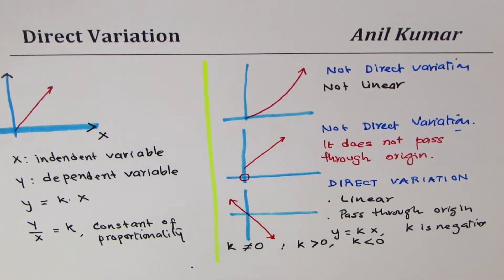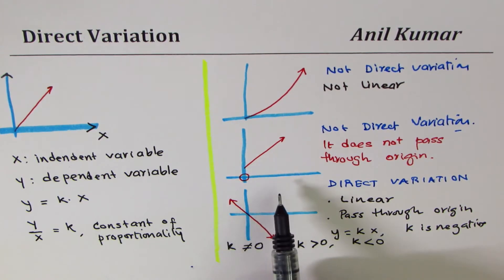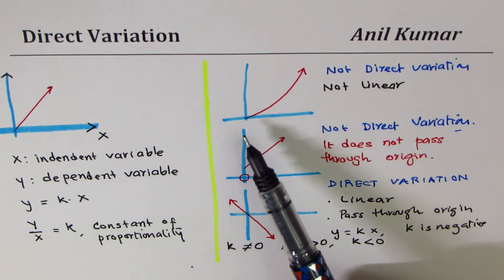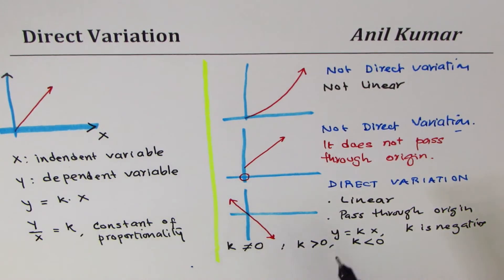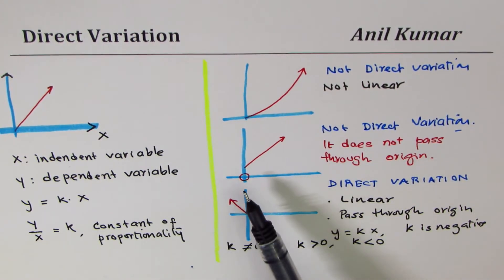So that is what it is in direct variation. The lines could be going down as you move right or can be going up as you move right, however they should be straight lines.